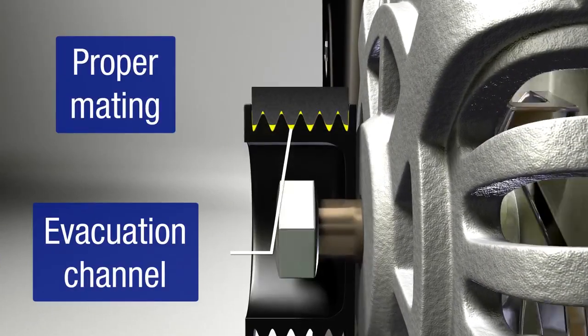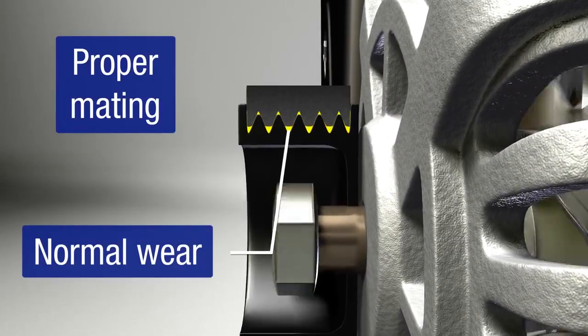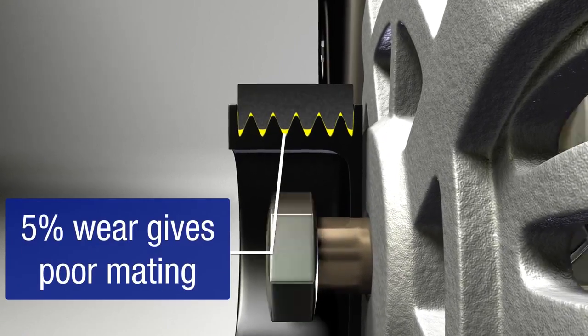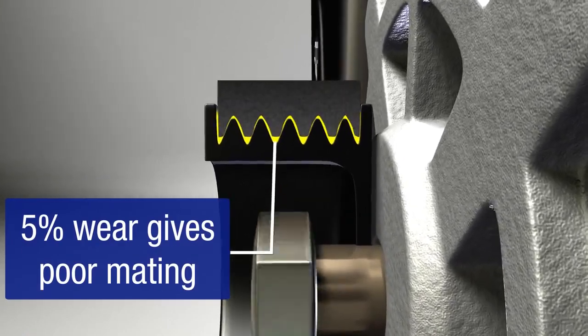The belt loses material with normal wear. With just five percent belt wear, the belt will not mate properly with the pulley, losing traction in the ridges.